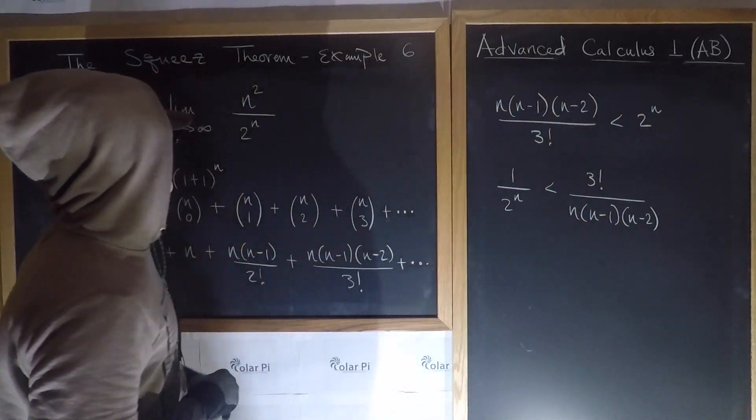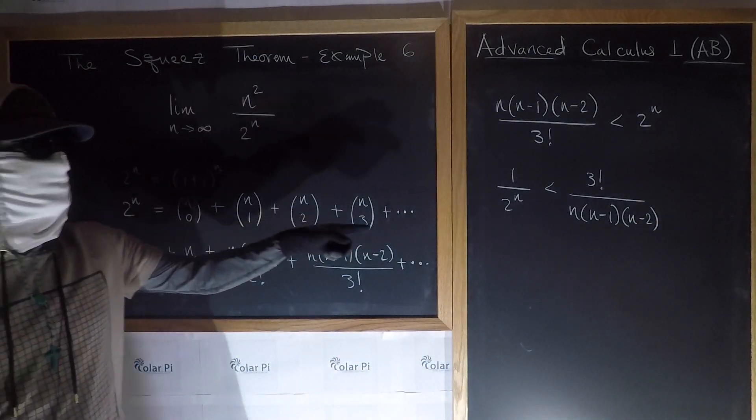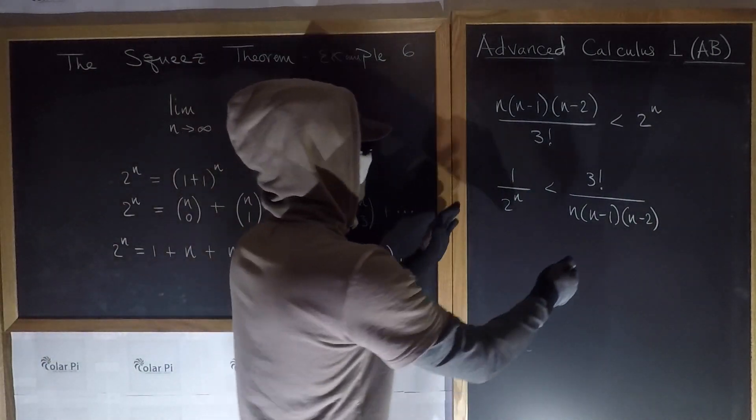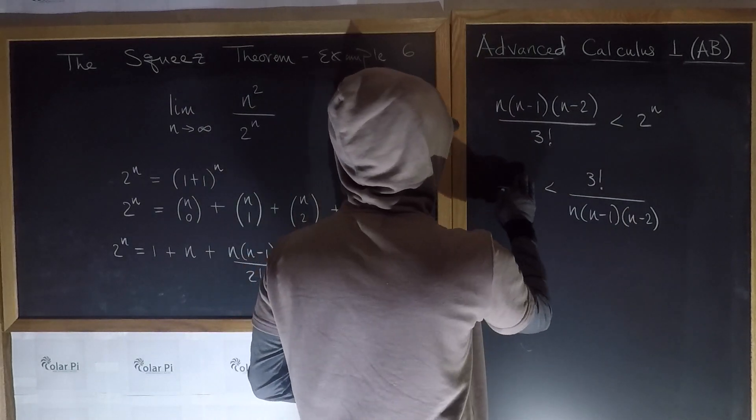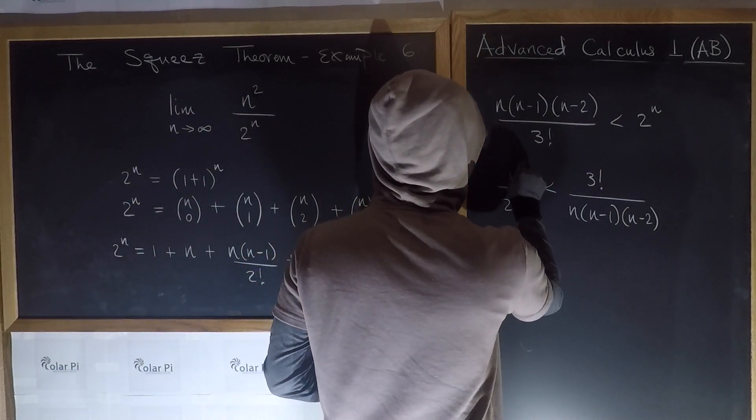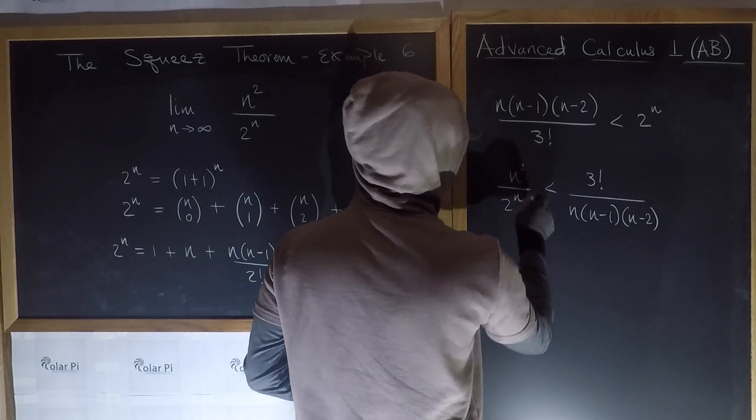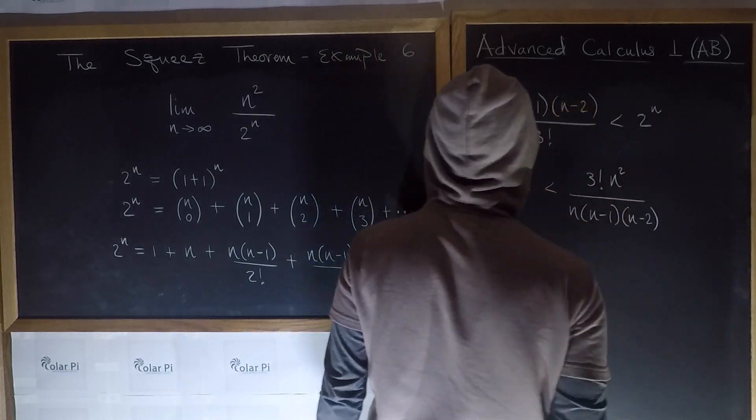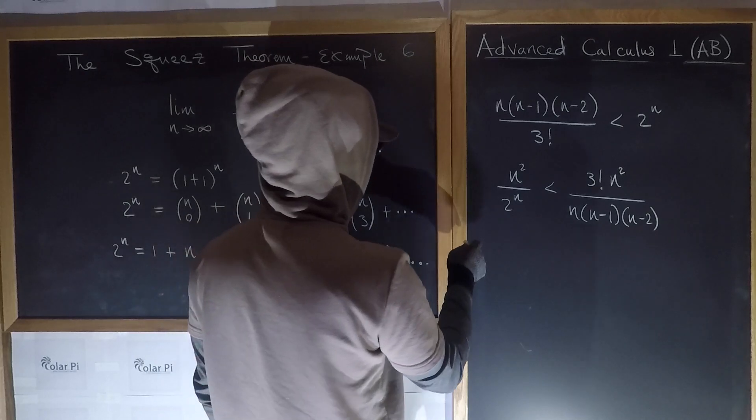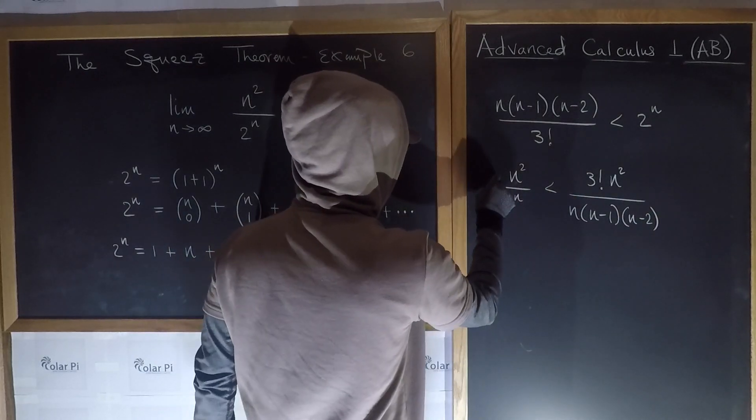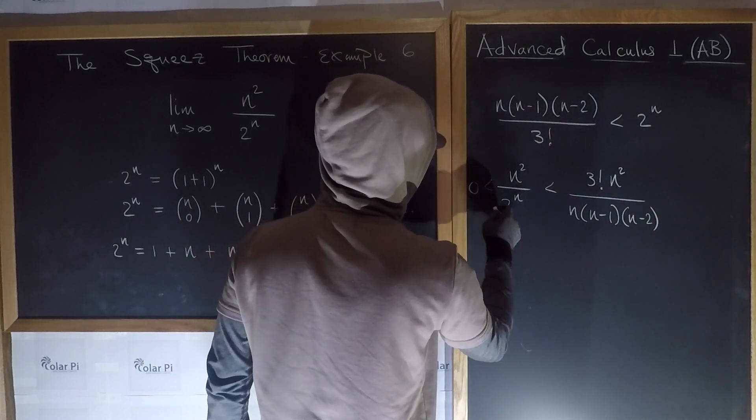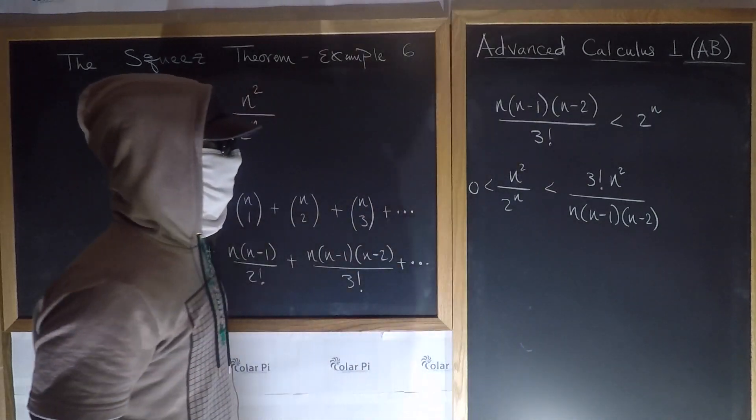Okay, and then next, because we want an n squared on top of 2 to the n, I'm going to multiply both sides of this by n squared. So that amounts to writing an n squared here, right, and then writing an n squared here. And also we should note that 0 is less than this quotient, right? Okay,